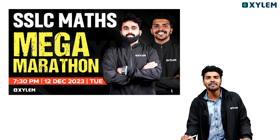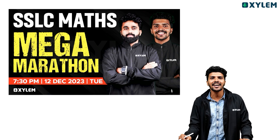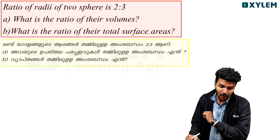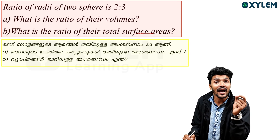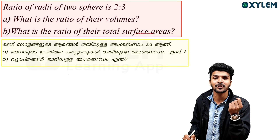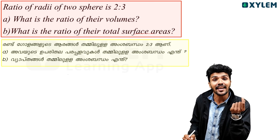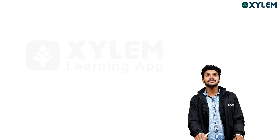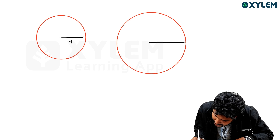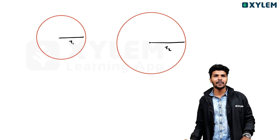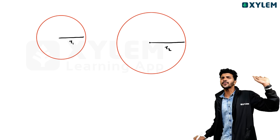Let's start. The answer involves two spheres. The radius — Radius R1 and Radius R2 — two spheres.